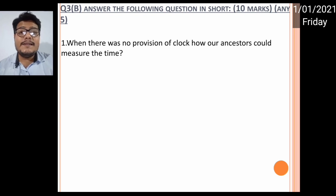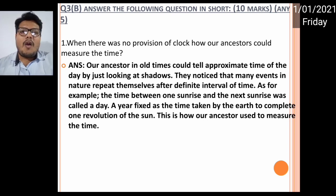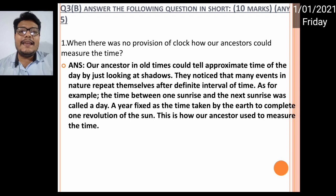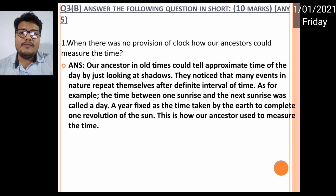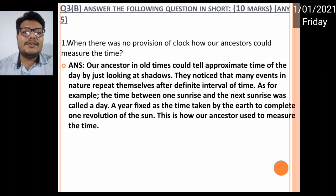Our ancestors in old times could tell approximate time of the day by just looking at shadows. They noticed that many events in nature repeat themselves after a definite interval of time. For example, the time between one sunrise and the next was called one day, and the time taken by the Earth to complete one revolution is one year.